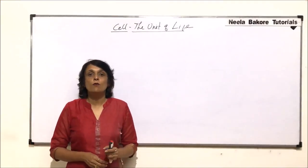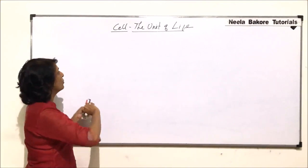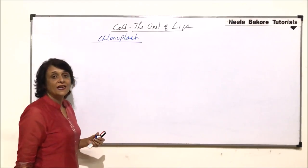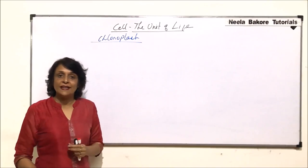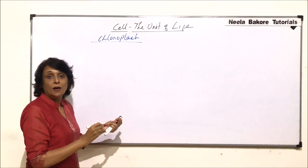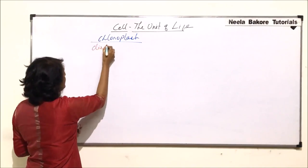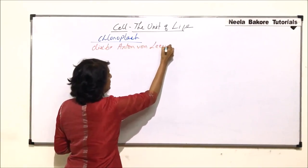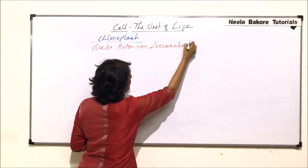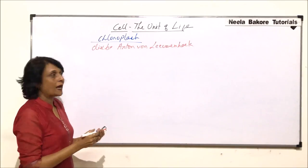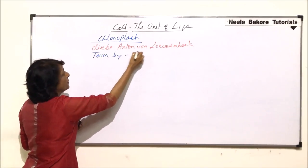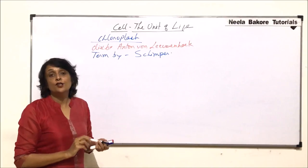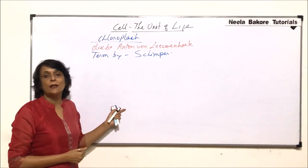In this part we will take up one of the plastids — chloroplasts. Chloroplasts are the green plastids or the green pigment-containing plastids. These chloroplasts were discovered by Anton van Leeuwenhoek, but the term chloroplast was given by Schimper. We will first take up the different shapes and numbers of chloroplasts found in different types of cells, and then we will take up the detailed structure.